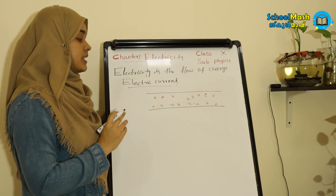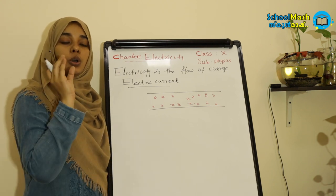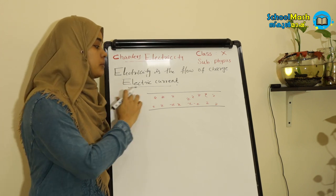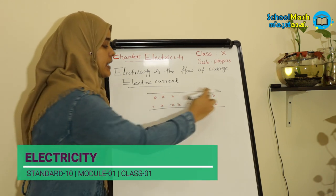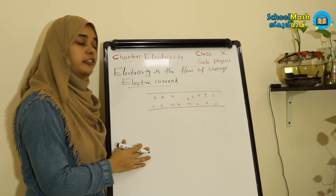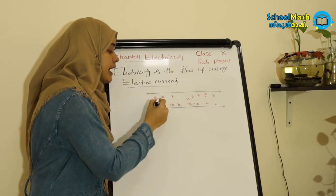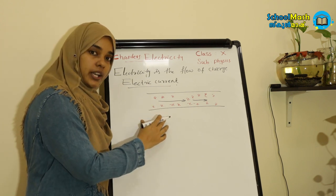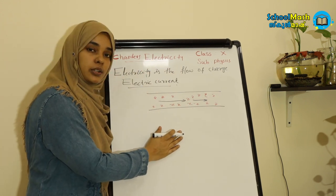Electric current is the flow of charges through a particular cross-sectional area in unit time. In a metallic conductor, there are free electrons. When an external force is applied, those free electrons flow in one direction and the current flow will start.